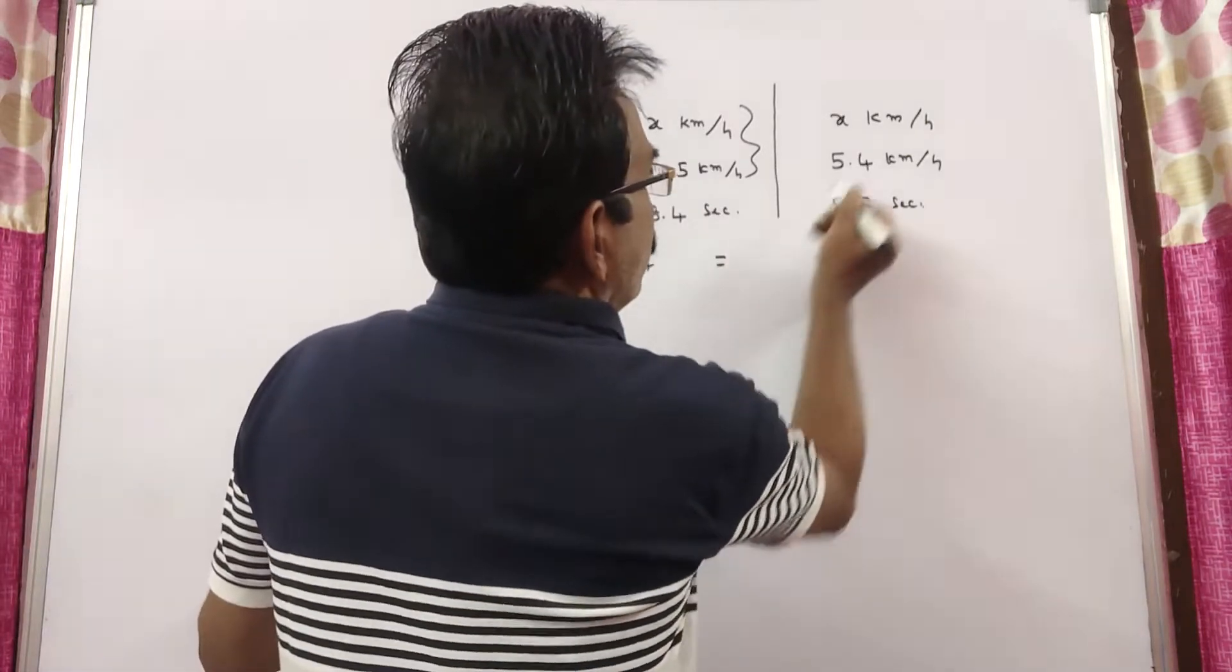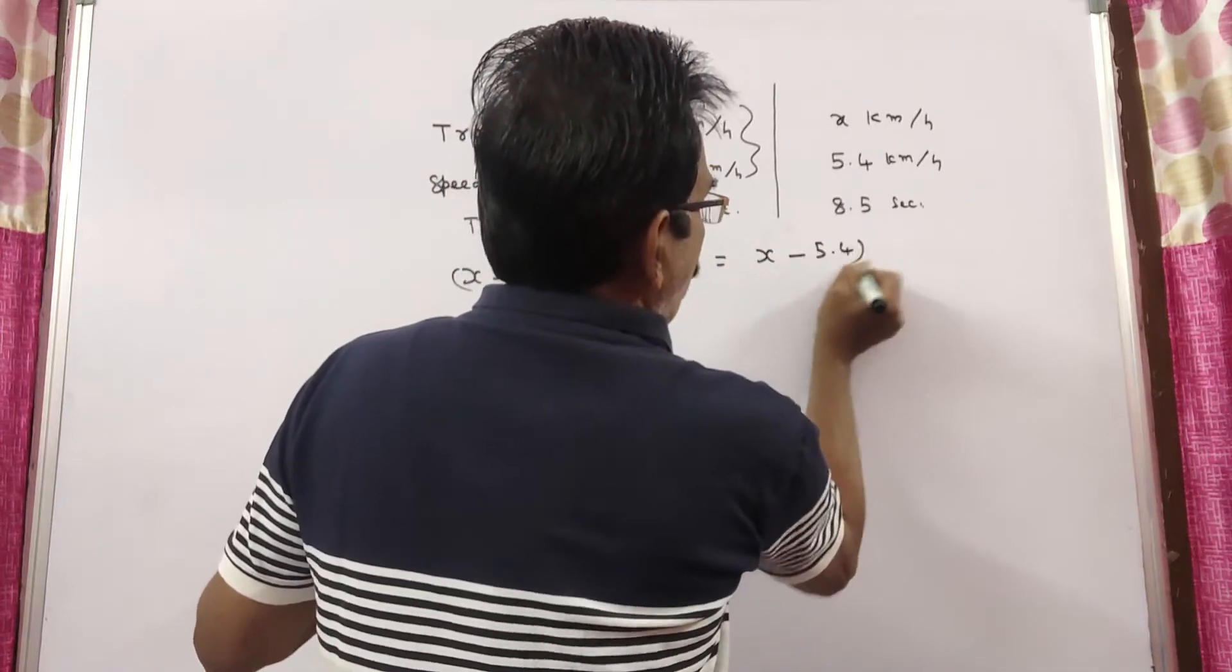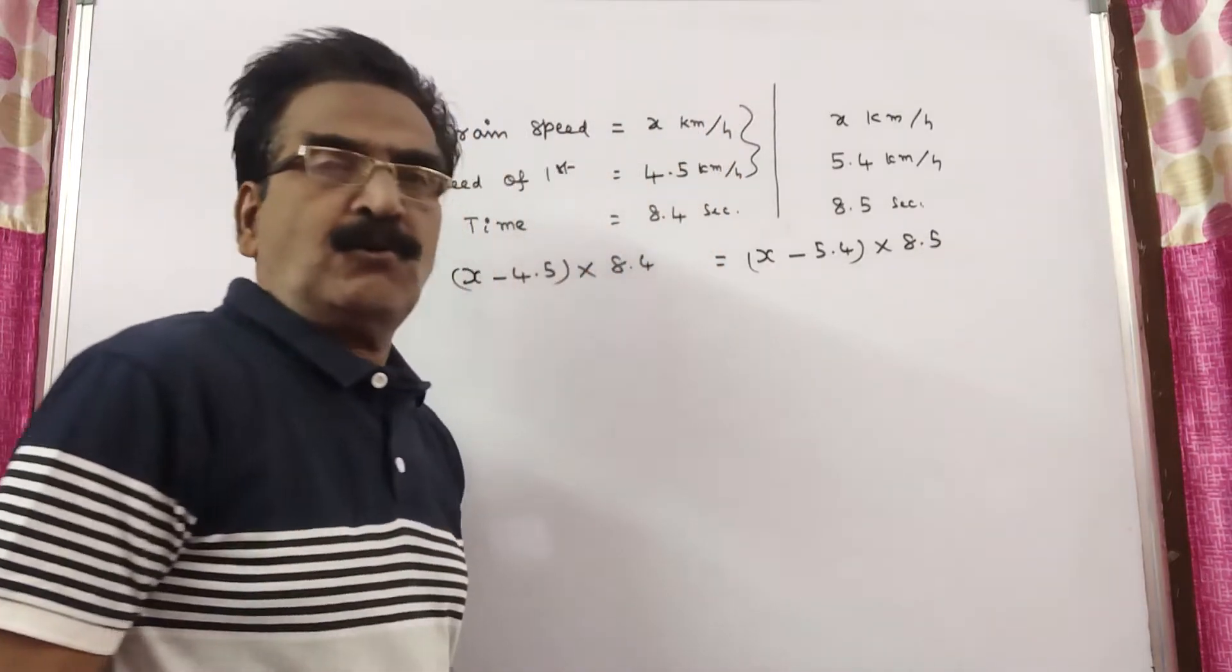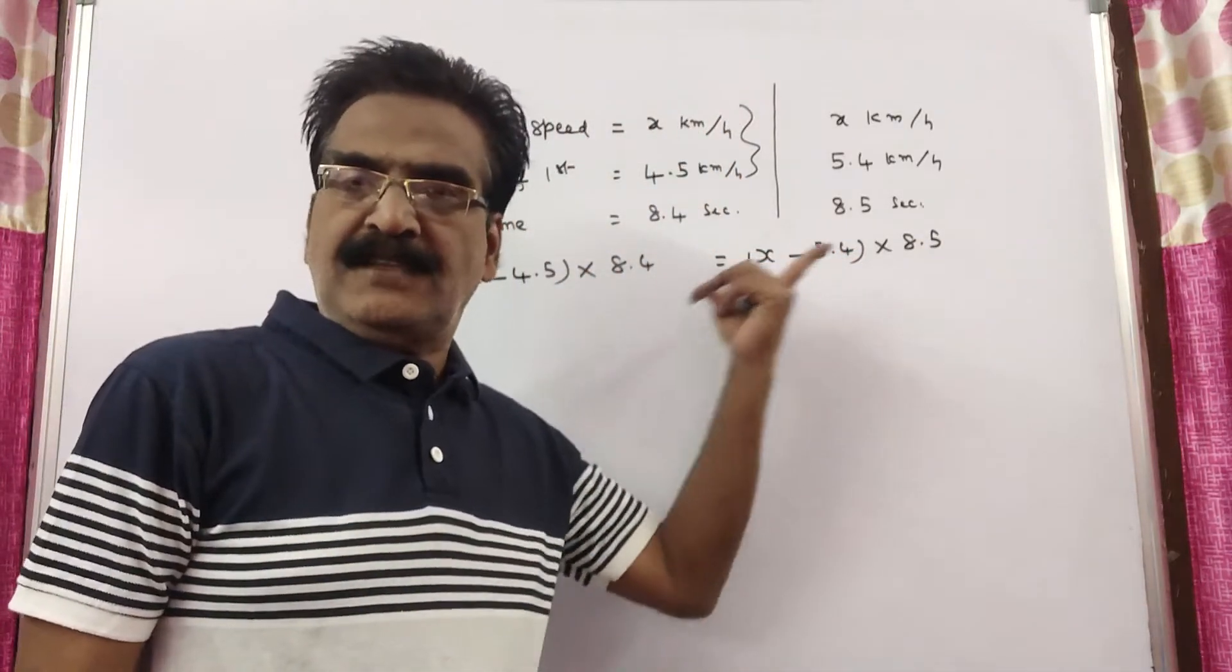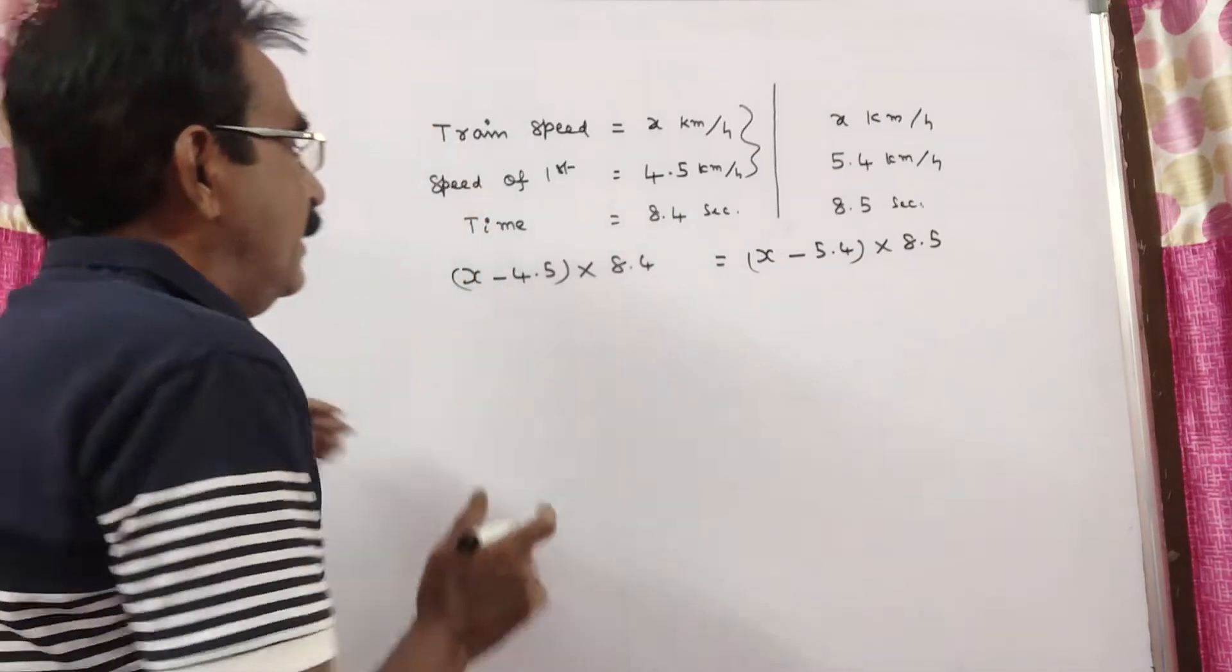Here also, we are getting the length by doing x minus 5.4 into 8.5. Here also, we get the length of the train. In both the cases, the lengths of the trains are equal.